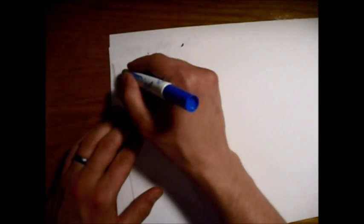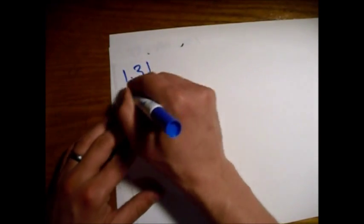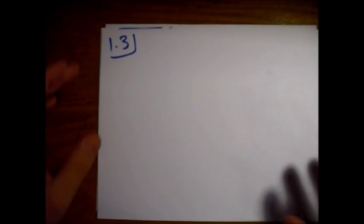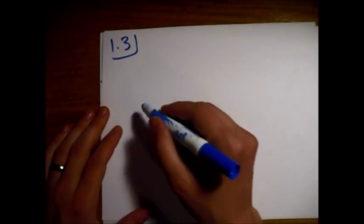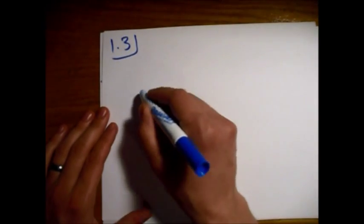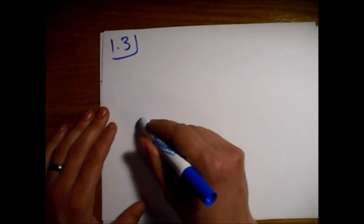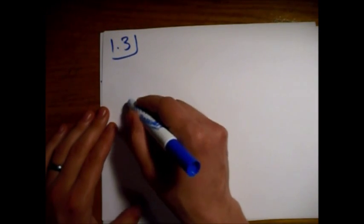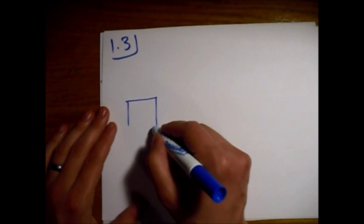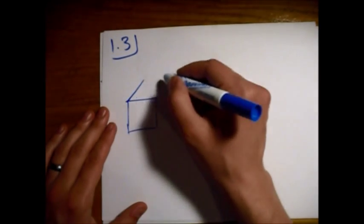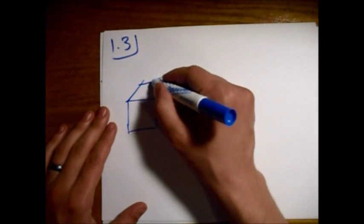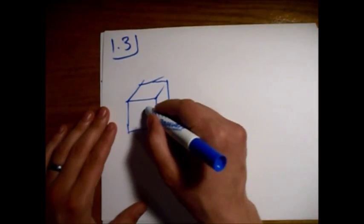All right, so this is Griffith E&M problem 1.3. Find the angle between the body diagonals of a cube. I actually have to go look up what body diagonals are, but basically you have your origin at the center. I don't know if I can draw this. Once I start drawing the angles in, it's going to look really messy.